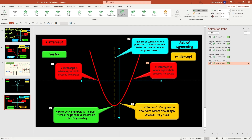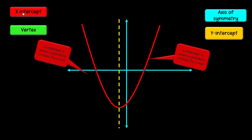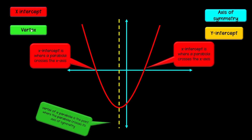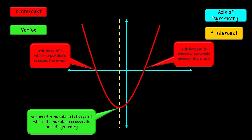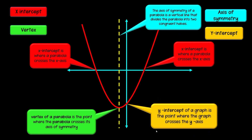Now, once all the triggers and animations are done, let's go ahead and check this out. X intercept — boom! Vertex — boom! Axis of symmetry — perfect! Y intercept — perfect!